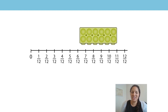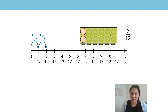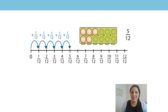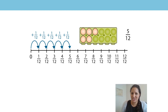Remember to start at zero. Zero, one twelfth, two twelfths, three twelfths, four twelfths, five twelfths. We have five twelfths. How would I write this using repeated addition of the unit fraction?